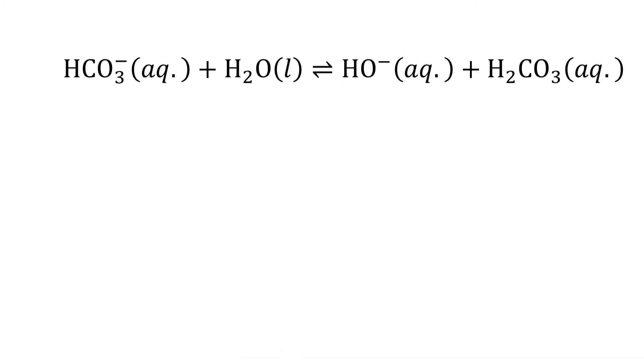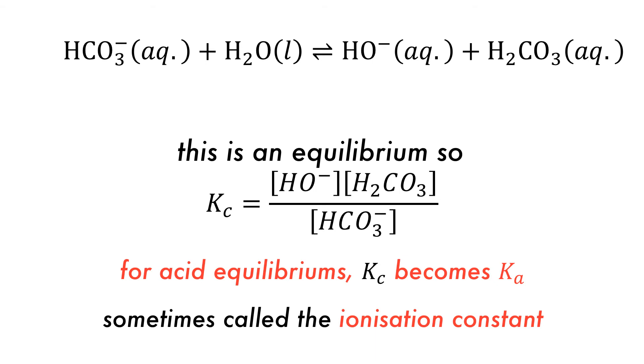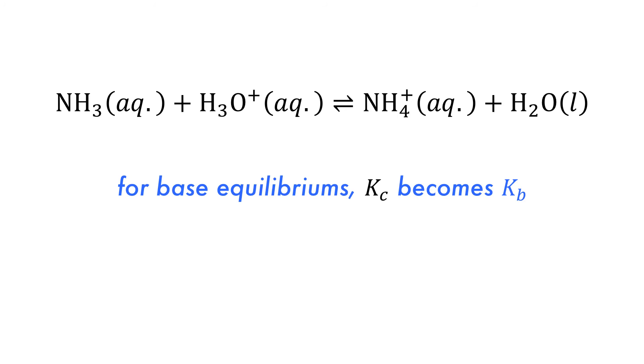The dissociation of an acid is in equilibrium, and thus it can be described by the equilibrium constant. The equilibrium constant Kc for acid dissociation is called Ka and is sometimes referred to as the ionization constant. The dissociation of a base is also likewise in equilibrium, and for base equilibriums Kc becomes Kb, and has this equation.